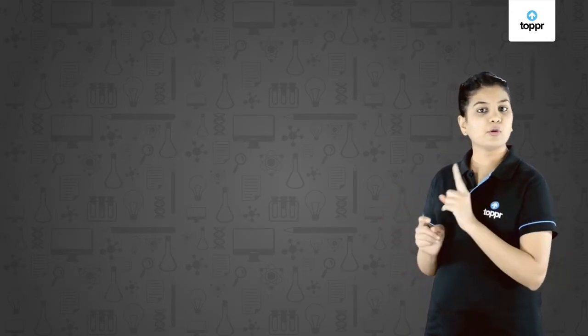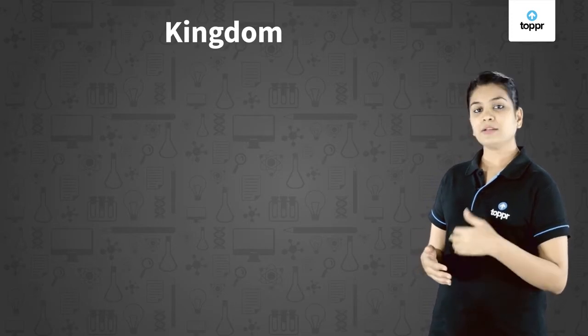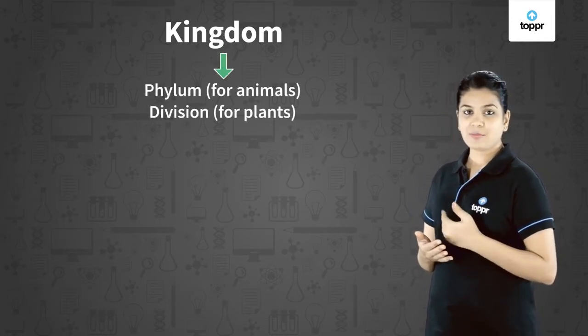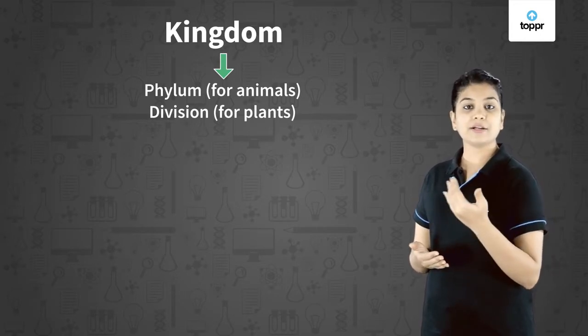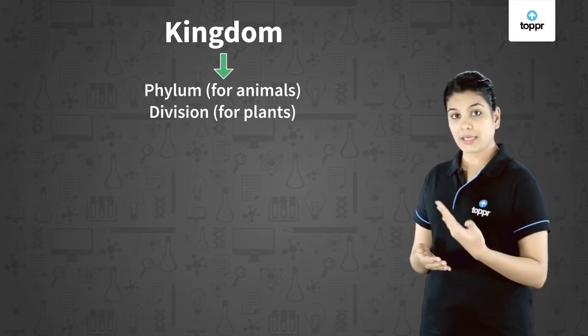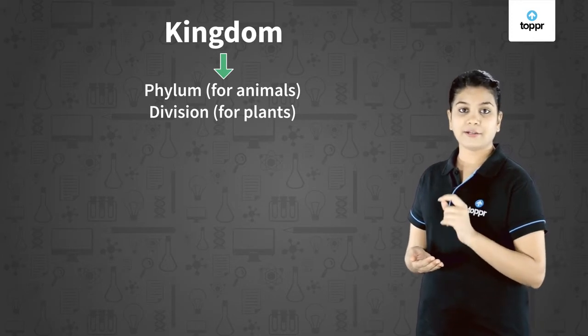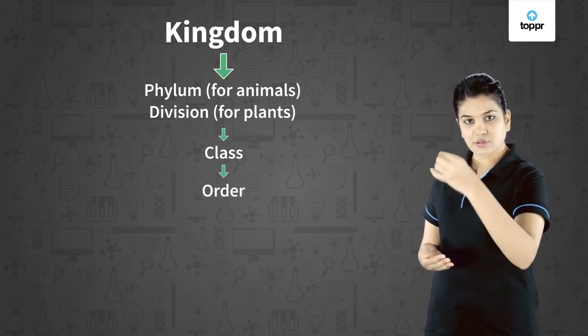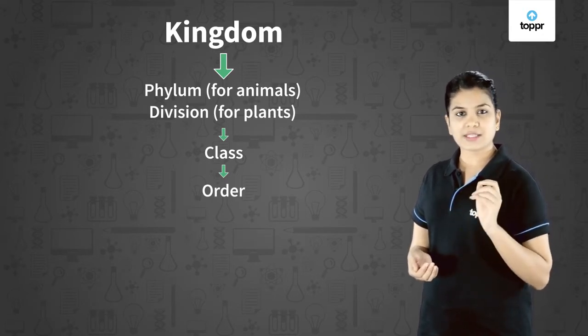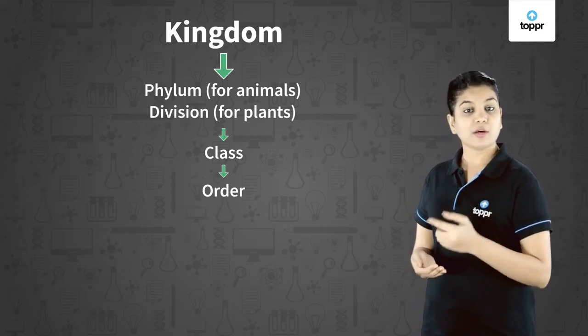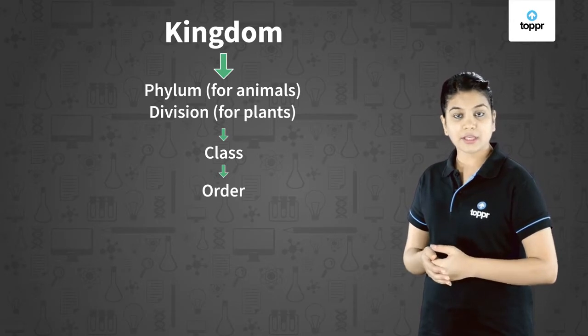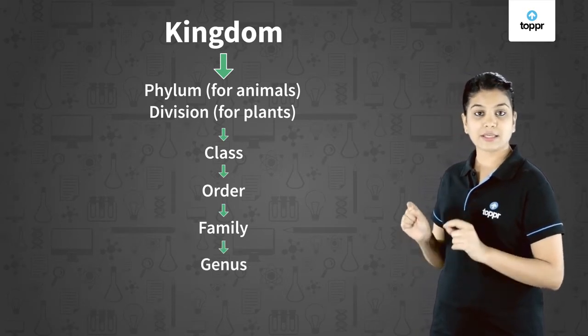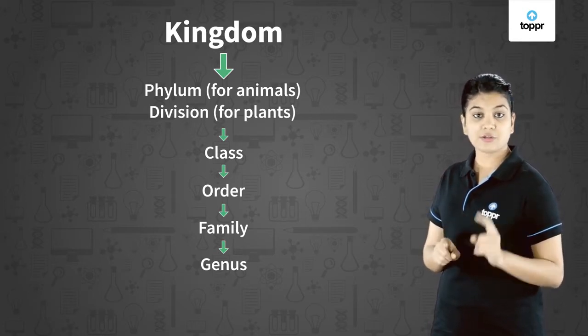The broadest category is kingdom, which is divided further - in animals the sub-level is called phylum whereas in plants the sub-level is called division. Kingdoms are divided into phylum or division, which are divided into class. Class is divided into order, orders into families, families into genus, and lastly the genus gets divided into the smallest unit of classification which is species.